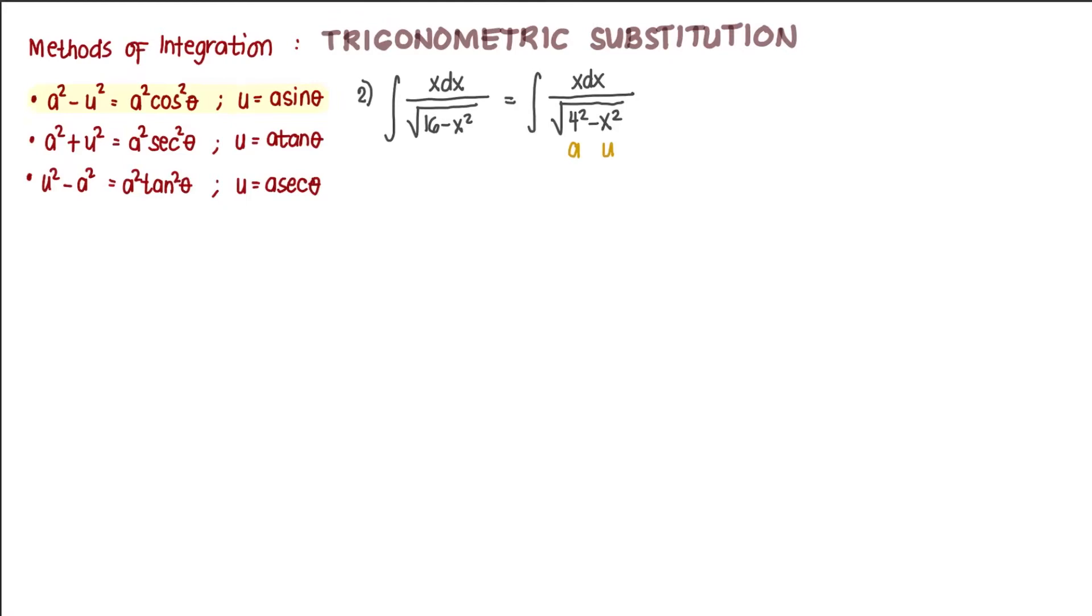It follows the pattern here, a squared minus u squared, so we can perform integration by trigonometric substitution. So now we let u, but our u is x, so we let x be equal to 4 sine of theta, and finding dx, dx equals 4 cosine of theta d theta.